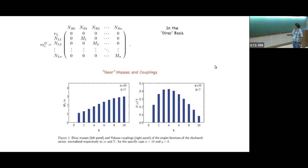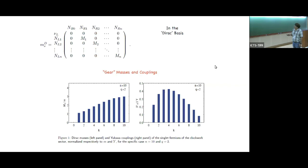I'll skip the clockwork models which I like very much. I'm done. We are at the crossroads of the physics beyond standard model. A lot of interesting ideas, and I couldn't cover all of them. I'll just talk about a few of the interesting ideas. As Jan said this morning, the discovery of the Higgs and LHC research have made a major impact on traditional BSM models, and we need new ideas and old ideas. Thanks.